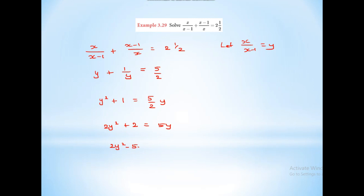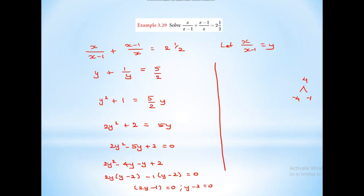Multiply: 2 into 2 is 4, and we need factors that add to minus 5. That gives minus 4 and minus 1. So 2y² minus 4y minus y plus 2 equal to 0. Factorizing: 2y(y minus 2) minus 1(y minus 2) equal to 0. So (2y minus 1)(y minus 2) equal to 0. Therefore y equals 1 by 2 and y equals 2.